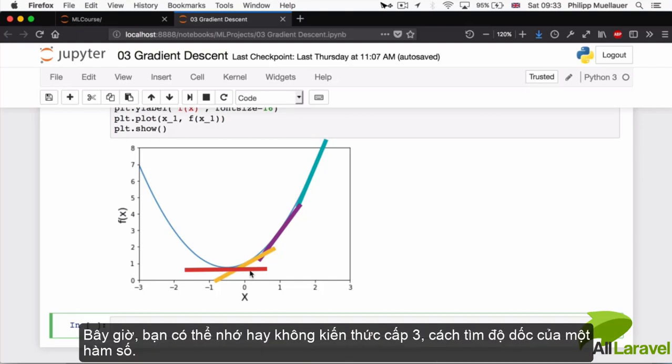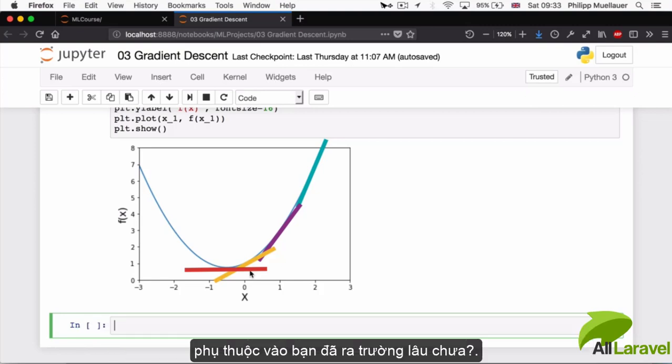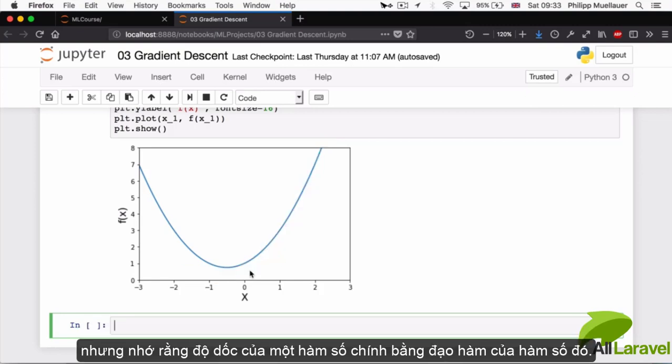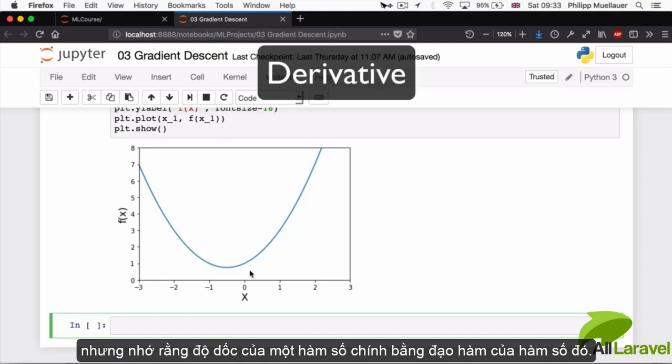Now, you may or may not remember from school how to find the slope of a function. Depends how long it's been. But as a reminder, the slope of a function is given by that function's derivative.